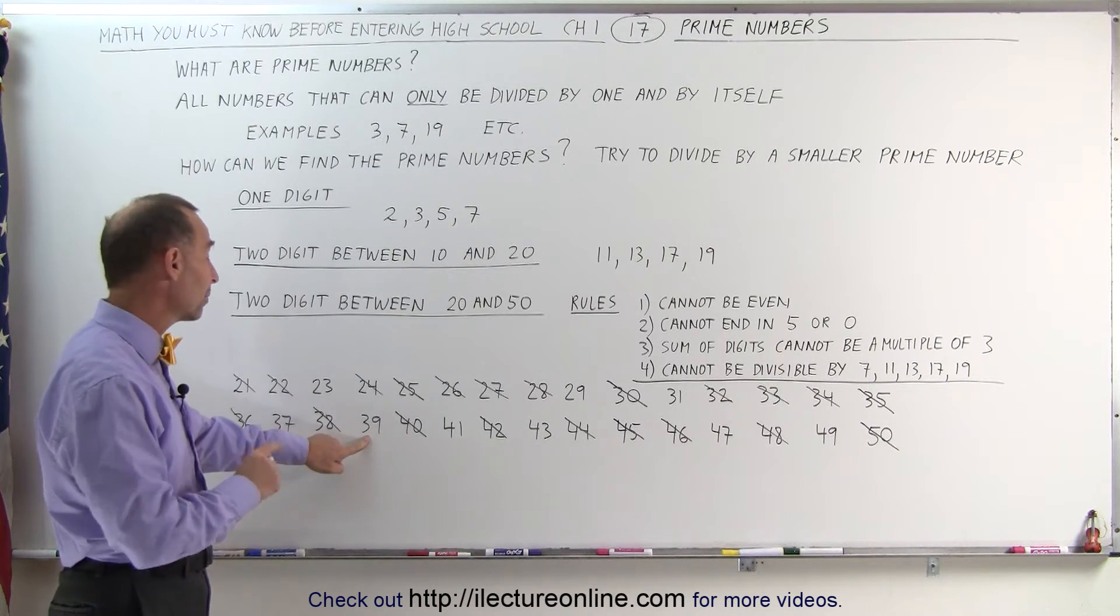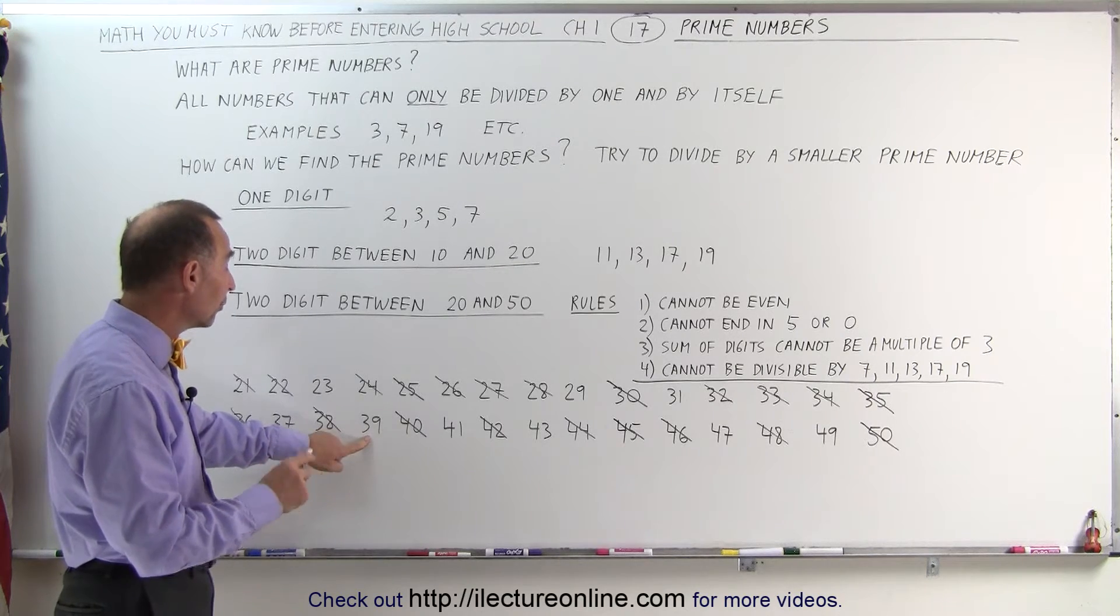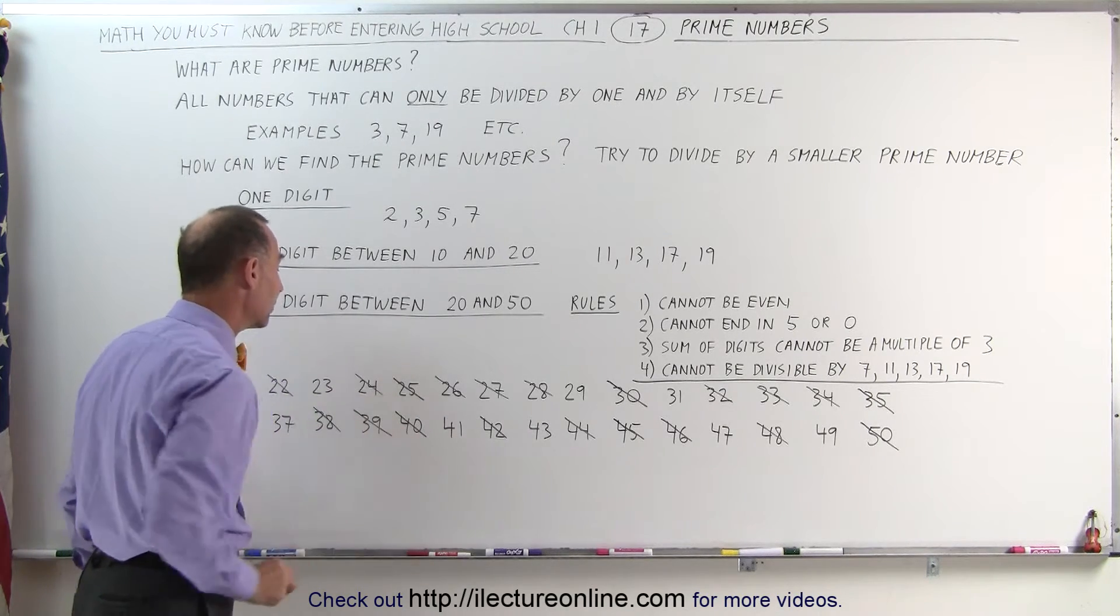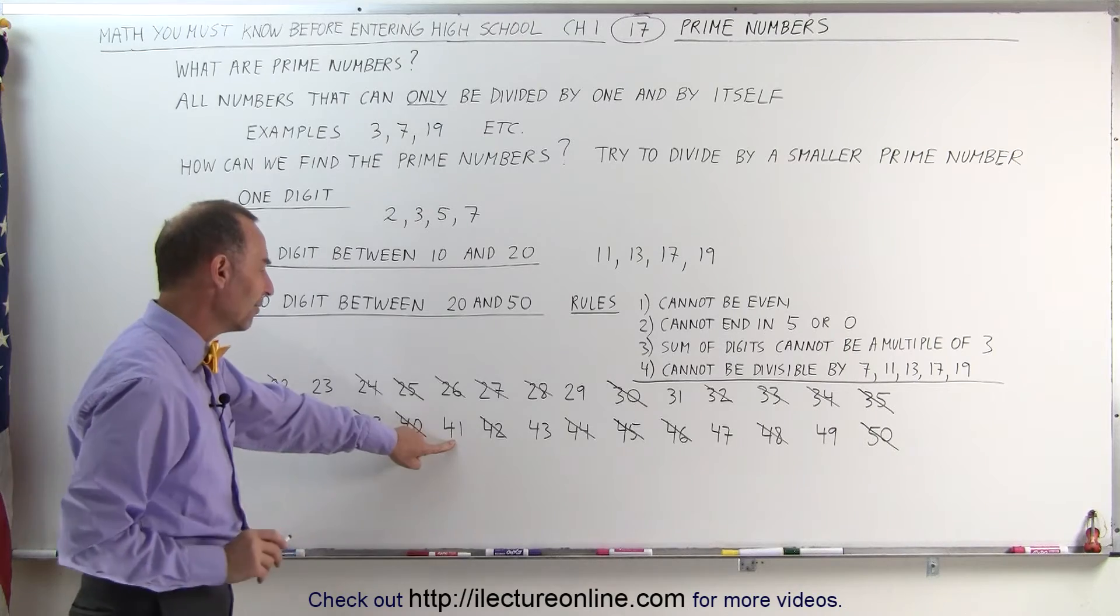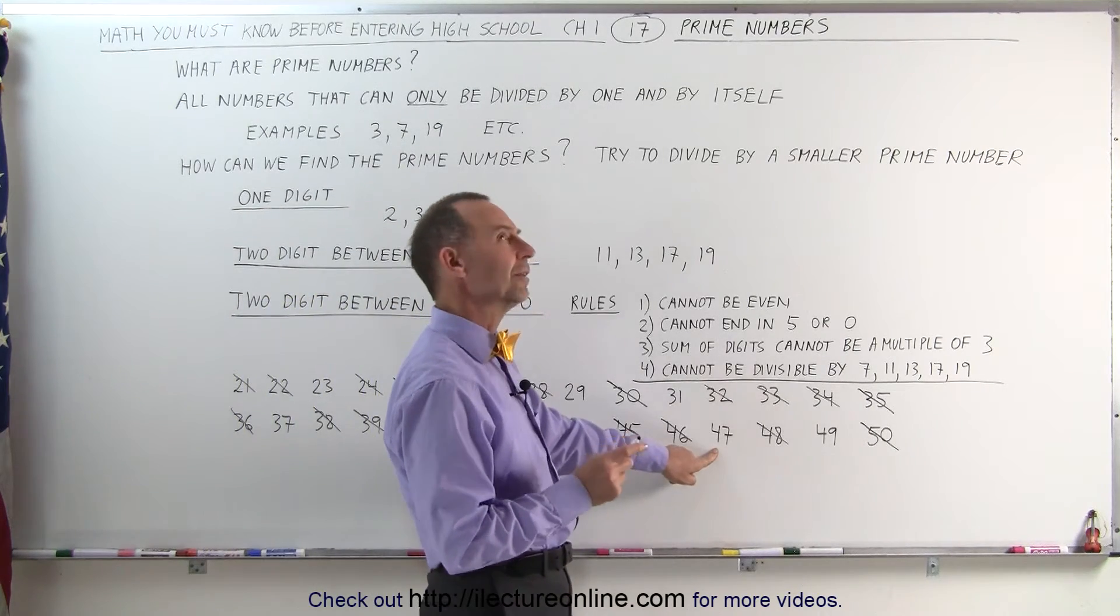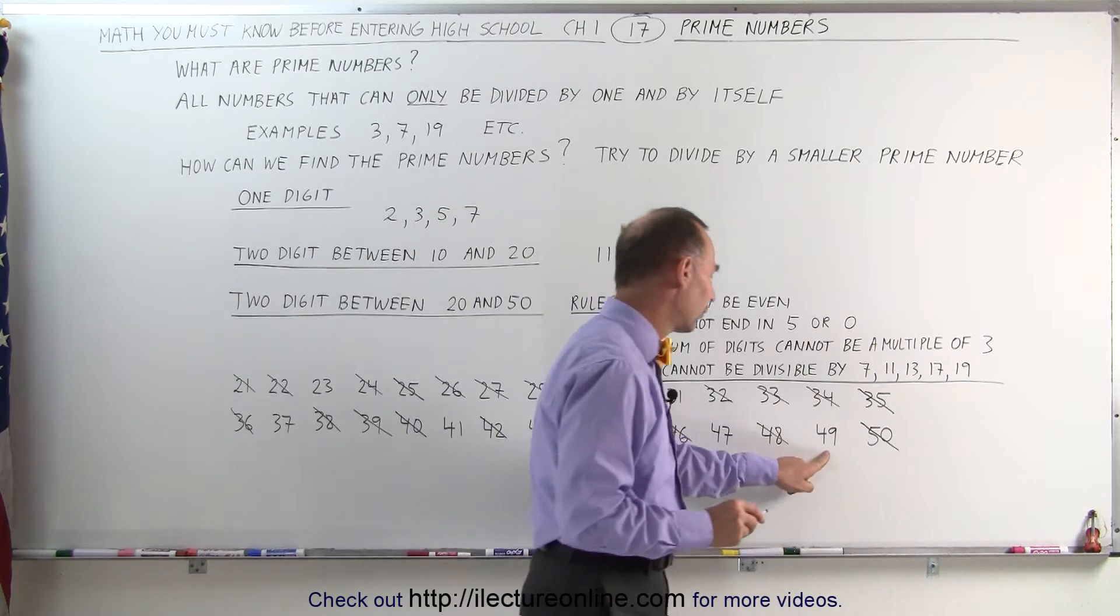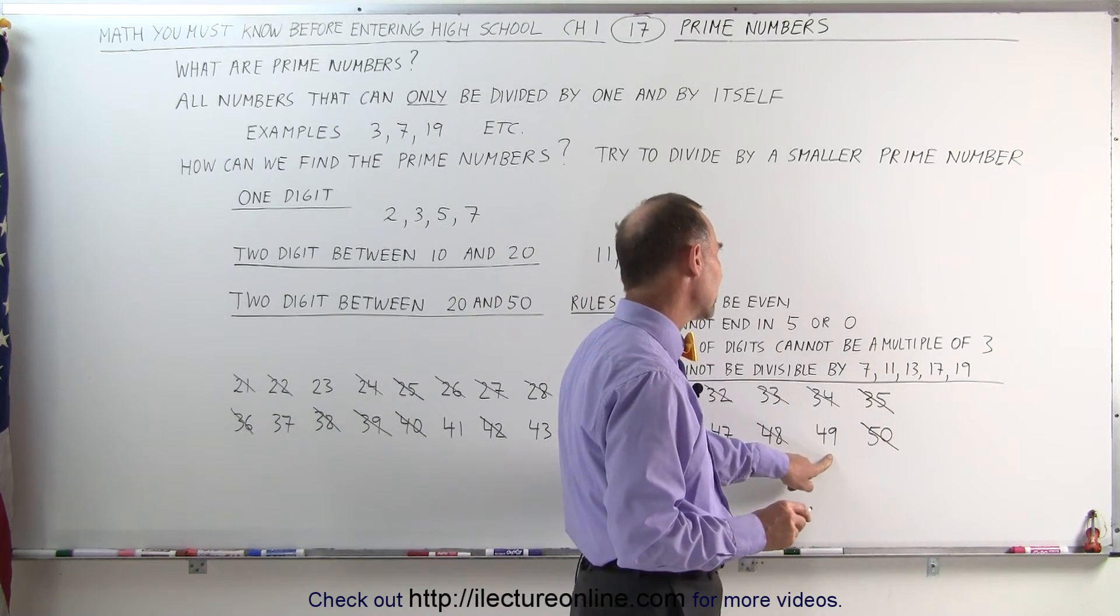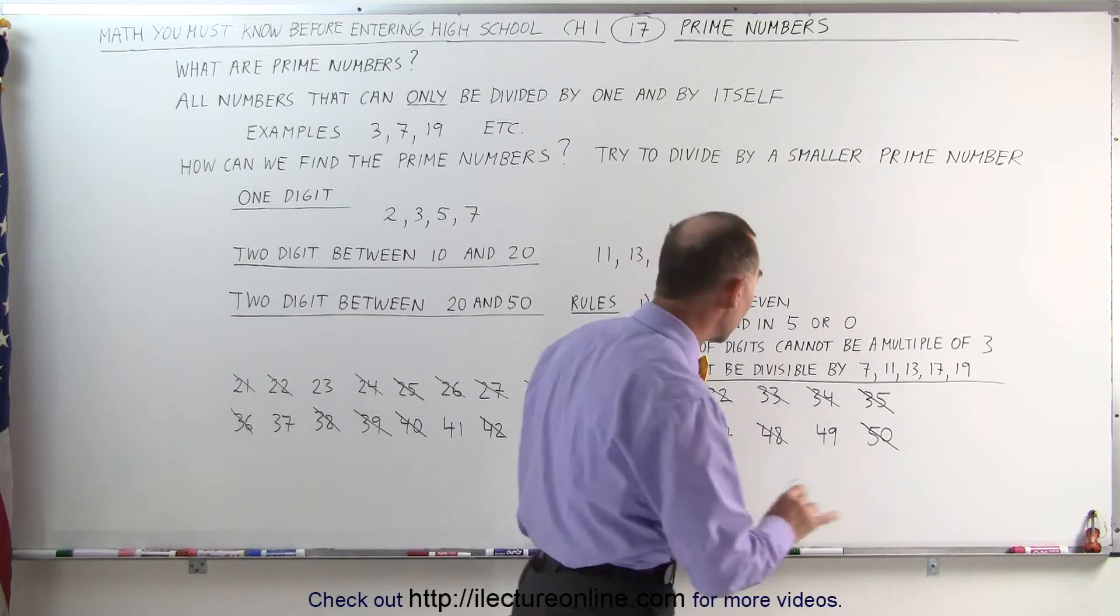39, yes, 3 plus 9, that's 12, which is a multiple of 3, not a prime number. 4 plus 1 is 5. 4 plus 3 is 7. 4 plus 7 is 11. 4 plus 9, that's 13. Okay, so we can't use that rule to get rid of those.